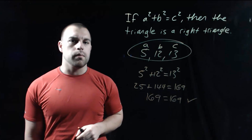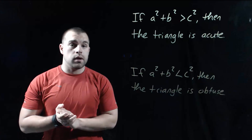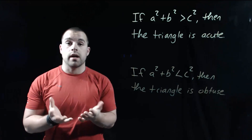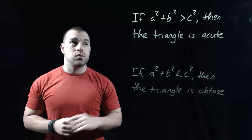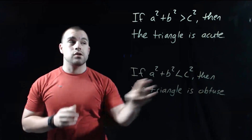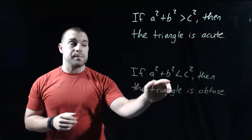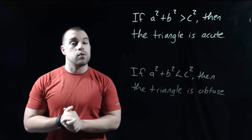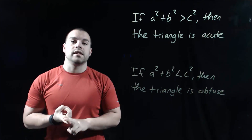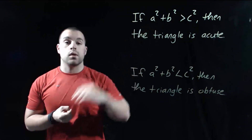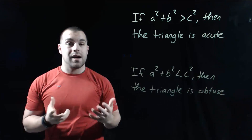But what happens if they're not equal? There are two other things that can happen when we use the Pythagorean Theorem, and based on what happens, that will affect what kind of triangle we're looking at. If A squared plus B squared is bigger than C squared, then the triangle is an acute triangle. If A squared plus B squared is smaller than C squared, then the triangle is an obtuse triangle. So if A squared plus B squared equals C squared, it's a right triangle; if it's bigger, it's acute; if it's smaller, it's obtuse.